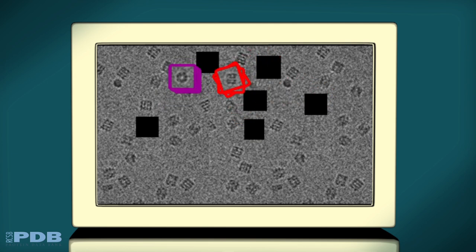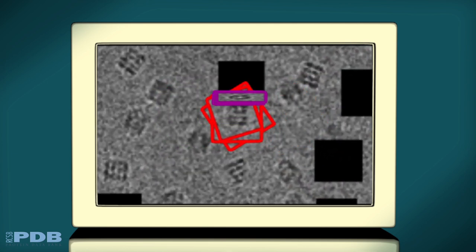The images are then grouped by orientation and then combined computationally to reconstruct the 3D shape of the molecule.